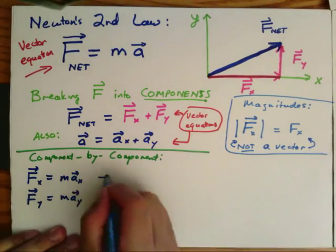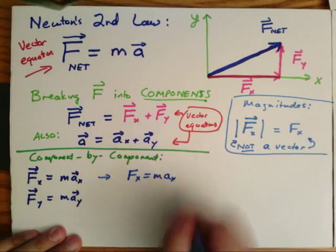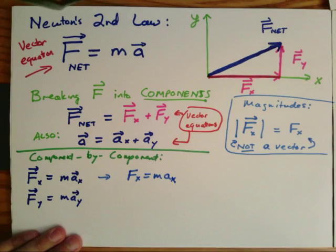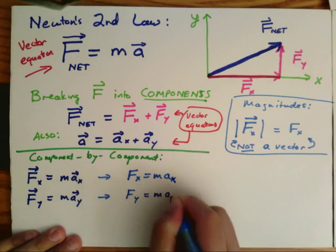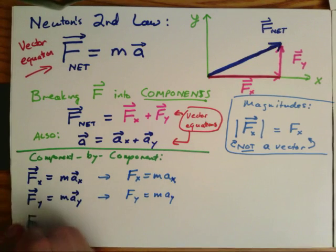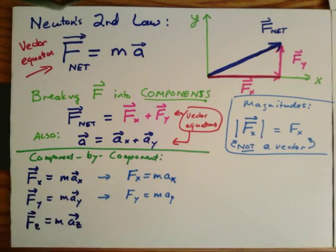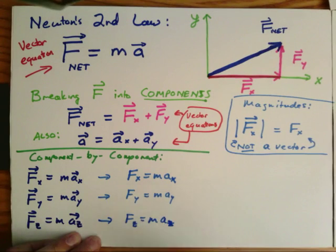So it must be true that the magnitude F of x is equal to M times a sub x. And likewise, the magnitude of F sub y is equal to M times a sub y. And of course, everything I've written here is true in x and y, but it must also be true if I have a vector that extends to the z direction as well. F of z is equal to M a sub z.